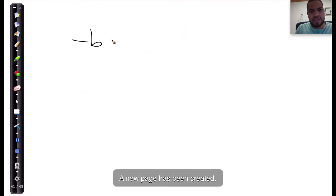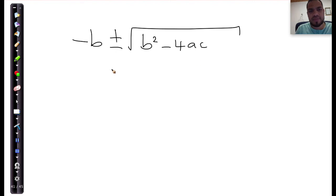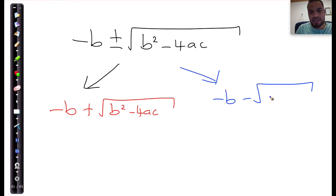So when I give you minus b plus or minus the square root of b squared minus 4 times a times c, you will tell me that this represents a formula which is minus b plus the square root of b squared minus 4 times a times c, and you'll tell me separate to that, it also represents the formula which is minus b minus the square root of b squared minus 4 times a times c.